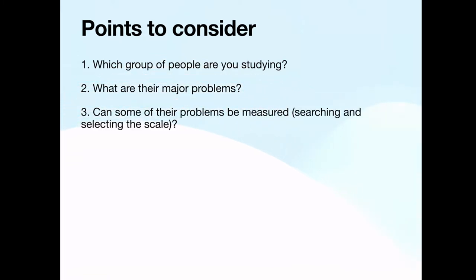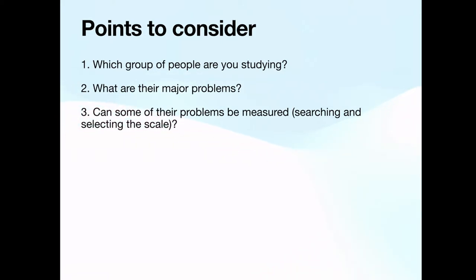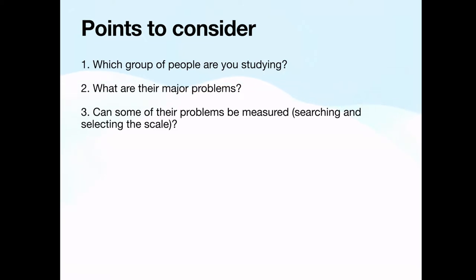Once you list them out, the third step is to find out whether some of those problems can be measured. The whole point of the scale or tool is to quantify a construct in numbers. So you need to think about whether those problems can be measured numerically. For this you need to search for the scale. For example, if I am interested in studying racism faced by migrant labourers, I will go to Google and search for a scale to measure racism. There are standardised tools to measure constructs like racism. Use Google and Google Scholar to search for scales, and I will be leaving a master link to all the major psychological scales in the description.